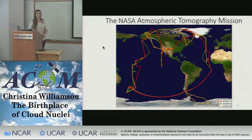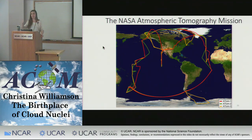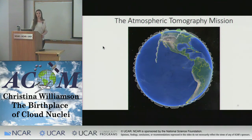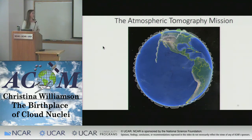To answer these questions, we are measuring aerosol size distributions on the NASA atmospheric tomography mission. I'm showing here the flight paths for the first three deployments. We're doing four deployments of ATom, once in each of the four seasons. We're flying over remote marine regions, covering both Pacific and Atlantic ocean basins and going pretty much pole to pole. We're not just flying a straight route — we're constantly scanning the vertical structure of the atmosphere from about 0.2 kilometers up to 13 kilometers in altitude, really getting from the marine boundary layer up to the free troposphere.